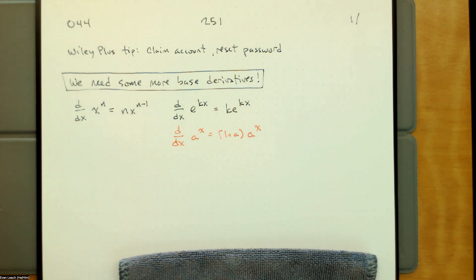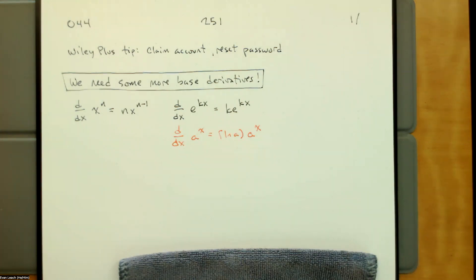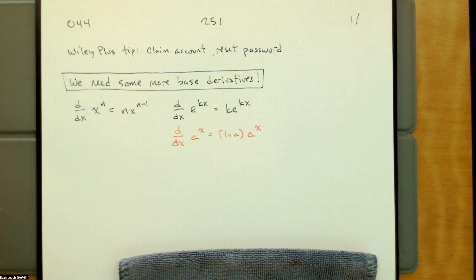It's a very straightforward process — there just seems like a lot to remember, but that's only because there's a lot to remember. You have to remember all of it, all the time in perfect detail. Right now we only have two base derivatives: a variable raised to a constant exponent and a constant raised to a variable exponent.